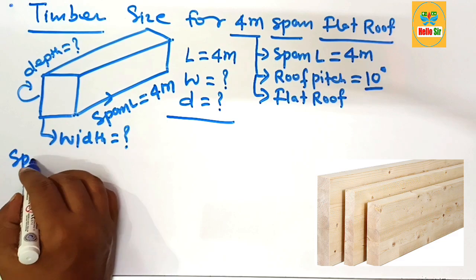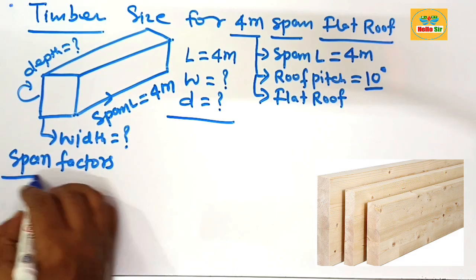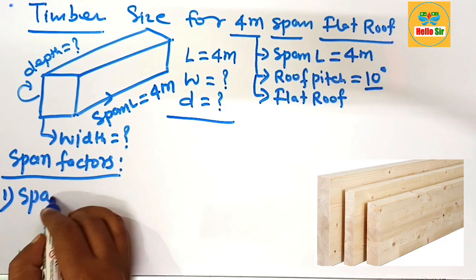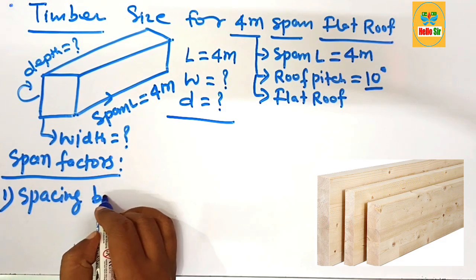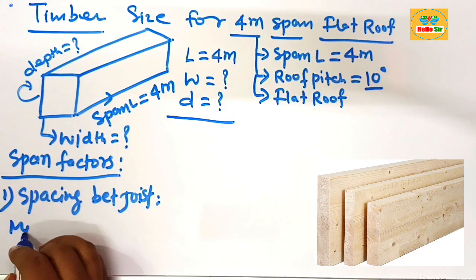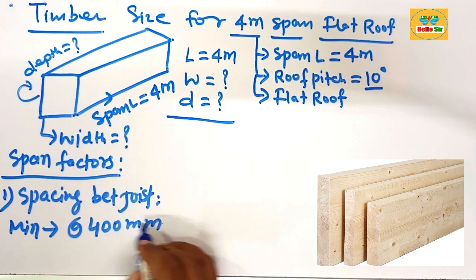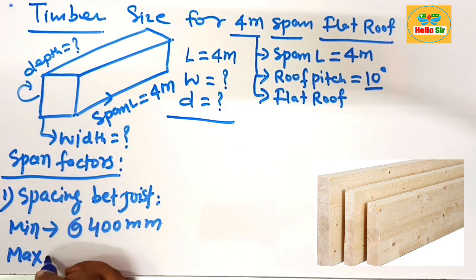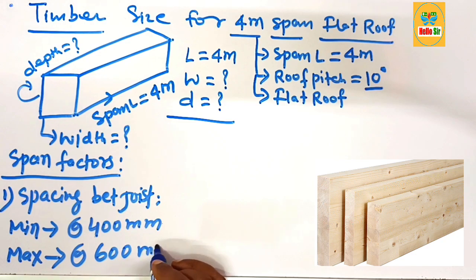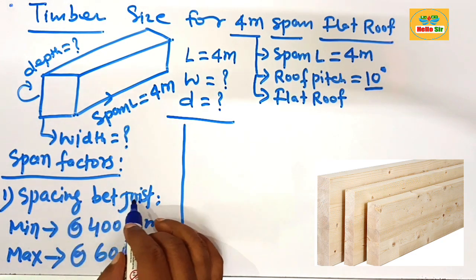There are various factors that decide the timber size. The first factor is the spacing between the joists. The minimum spacing between joists is about 400 mm and the maximum spacing is about 600 mm. This is the first factor — spacing between joists — that decides the timber size.